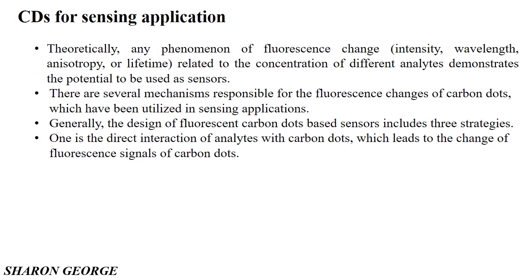In the first strategy — direct interaction — when a metal ion interacts with a carbon dot, it leads to changes in the fluorescence signal, either quenching or enhancement. Earlier reports showed that carbon dots can be used as metal detectors: when the carbon dot interacts with the metal, a quenching effect occurs — the intensity of the fluorescence reduces — and based on this intensity variation, we can analyze the metal concentration.